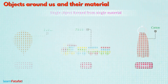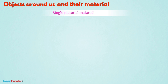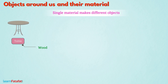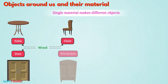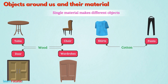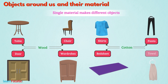It is also important to note that a single material can be used to make different objects. For example, from wood we produce things such as tables, chairs, doors, wardrobes, etc. From cotton we produce things such as shirts, pants, bedsheets, towels, etc.